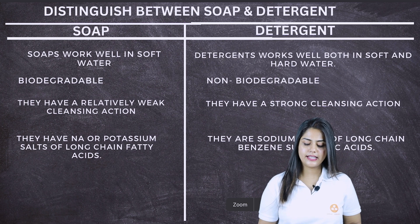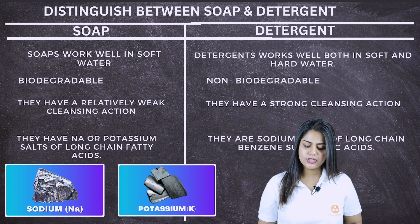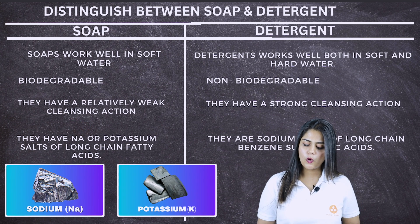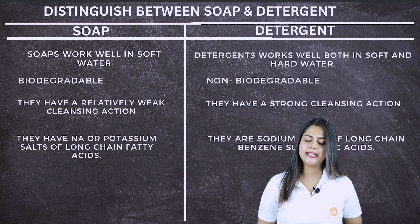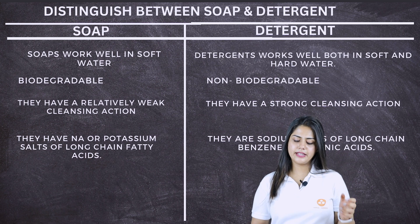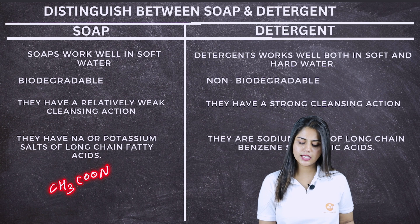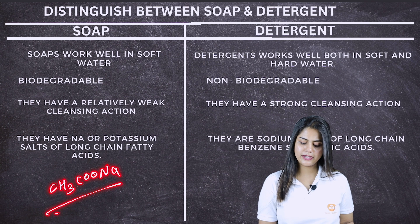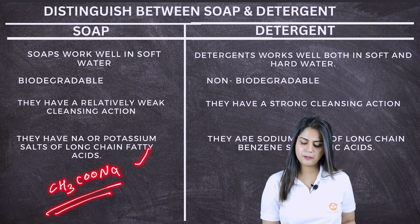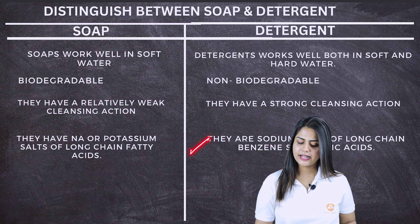The last point: soap contains sodium (Na) and potassium salts of long chain fatty acids. Simply, the formula is CH3-COONa — that is soap. Detergent, on the other hand, is sodium salts of long chain benzene sulfonic acid.